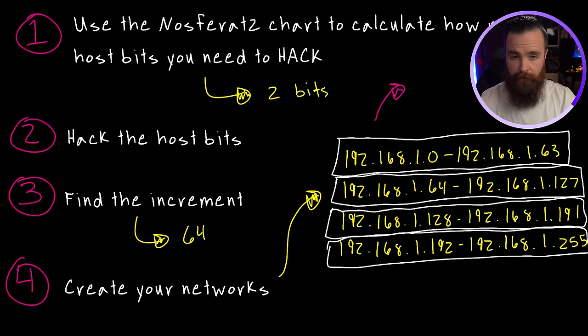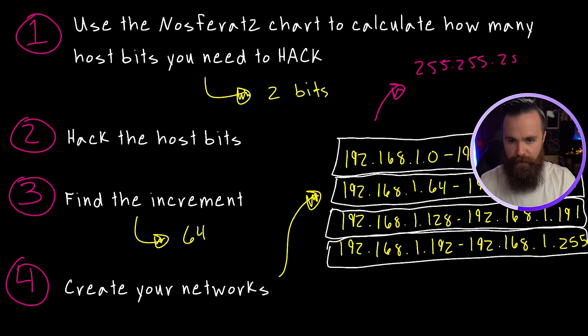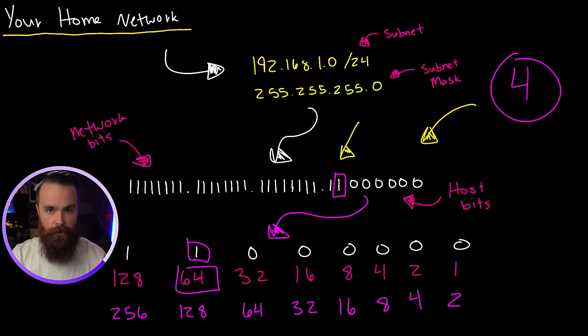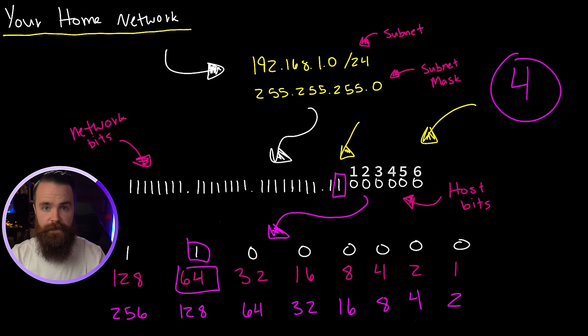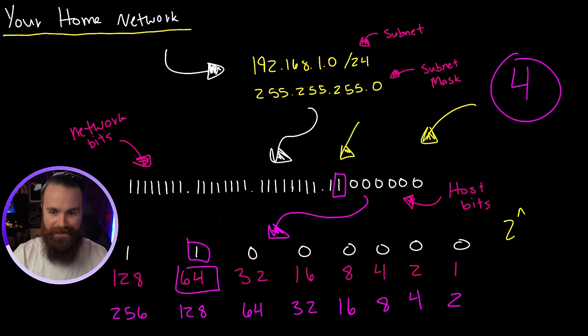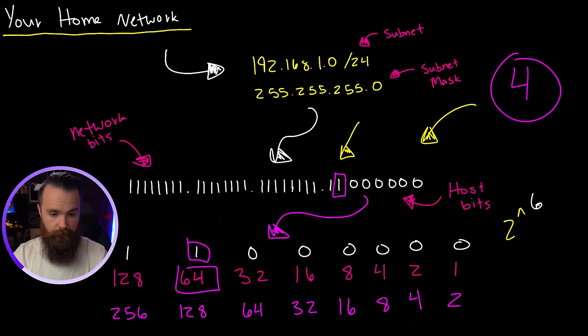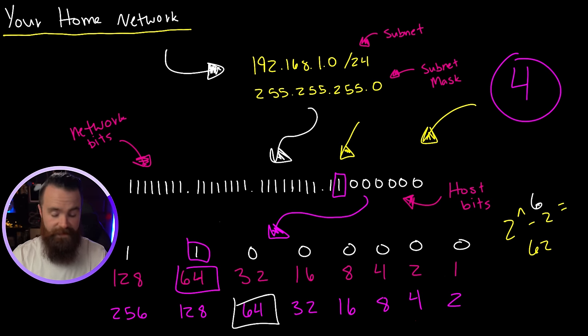Each of these networks will have a subnet mask of 255.255.255.192, or slash 26. Now a quick quiz — how many hosts are in each of these networks? We borrowed some host bits, so there are fewer hosts available per network. Looking at our subnet mask in binary, count the number of host bits: one, two, three, four, five, six — six host bits. The formula is two to the power of six, which equals 64, our increment. Subtracting two for the subnet address and broadcast address, we get 62 usable addresses per network.